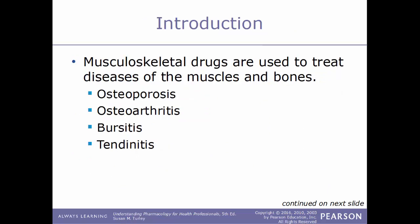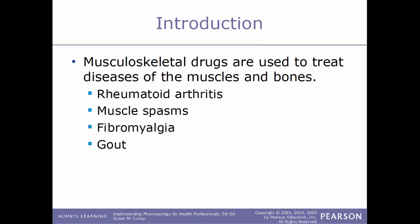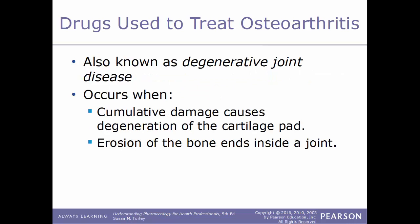A quick introduction: musculoskeletal drugs are used to treat diseases of the muscles and bones. Some examples that fall under this category include osteoporosis, osteoarthritis, bursitis, tendonitis, rheumatoid arthritis, muscle spasms, fibromyalgia, and gout. This is a short list of the possible diseases you could encounter with the musculoskeletal system.